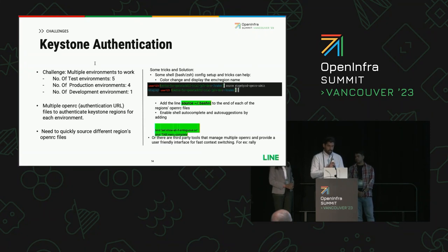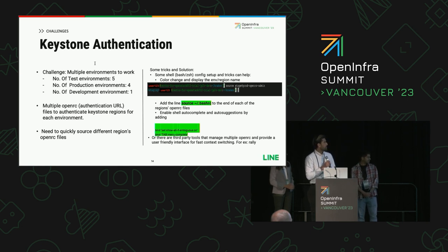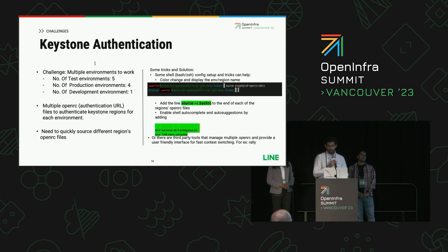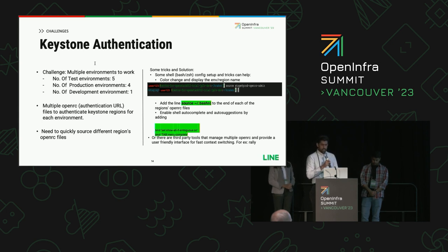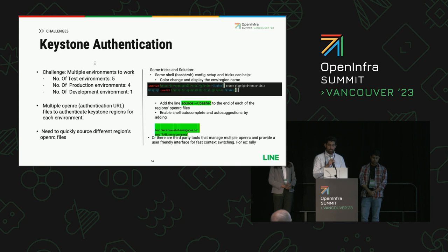Moving on to the challenges section — this is a bit more interesting. As beginners, we all face a lot of challenges when working with any tool, and within OpenStack as well. First and foremost, there are a lot of OpenRC files, as you all must be aware. Switching between many of them could be difficult and at times takes time as well. There are a few tricks — basic bashrc scripts and similar shell commands — but they do make your life a lot easier.